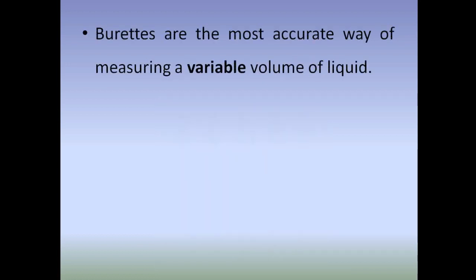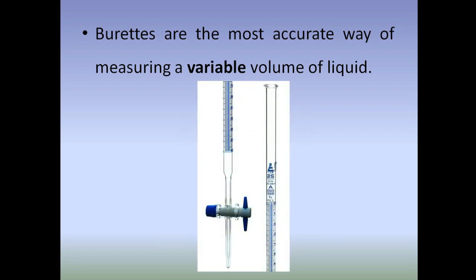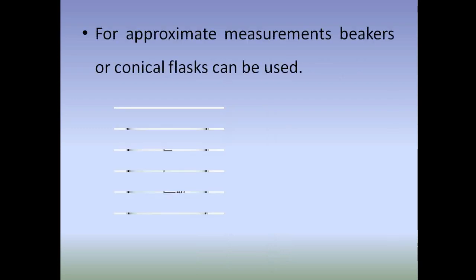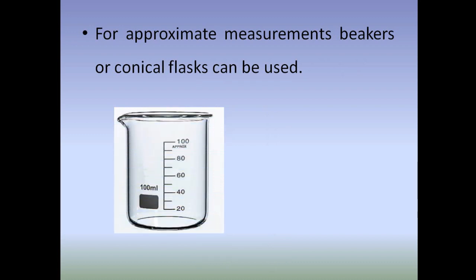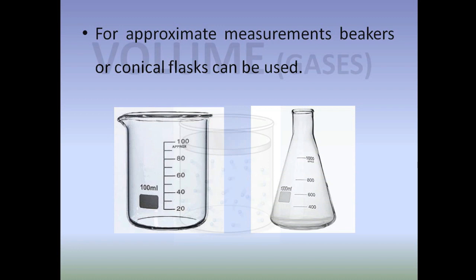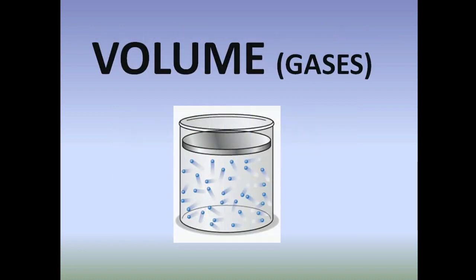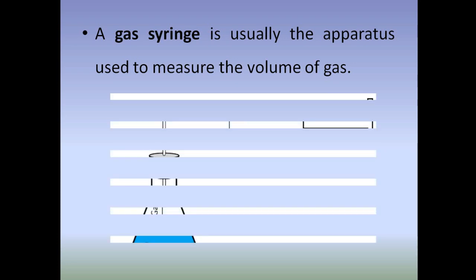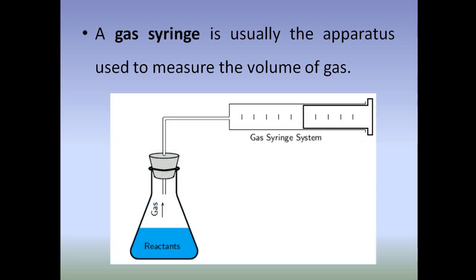Next: burettes. Burettes are the most accurate way of measuring a variable volume of liquid. Usually we use burettes in quantitative analysis, that means in titrations. For approximate measurements, beakers or conical flasks can be used in chemical laboratories.